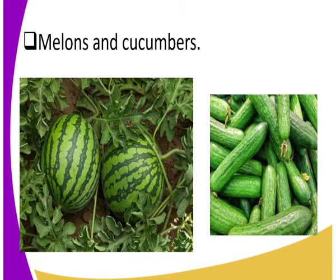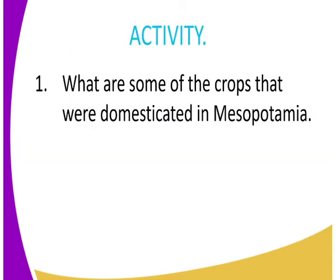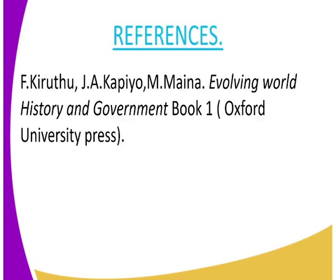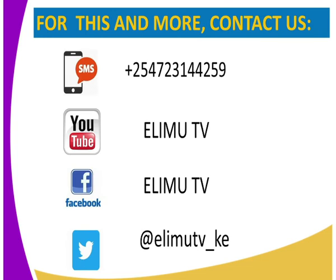We have just looked at some of the indigenous crops grown in Mesopotamia. For your assignment, state some of the crops that were domesticated in Mesopotamia. For reference, use the Evolving World History and Government Book One by Oxford University Press. This is Elimu TV — a station where you get to watch and learn. Contact us via SMS, YouTube, Facebook, or Twitter.